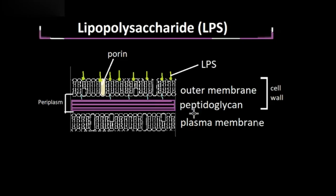The thin layer of peptidoglycan is attached to the outer membrane via lipoproteins, which are represented in blue. In addition to the lipoproteins, the outer membrane consists of porins and LPS. Porins are protein channels that allow nutrients to pass through.